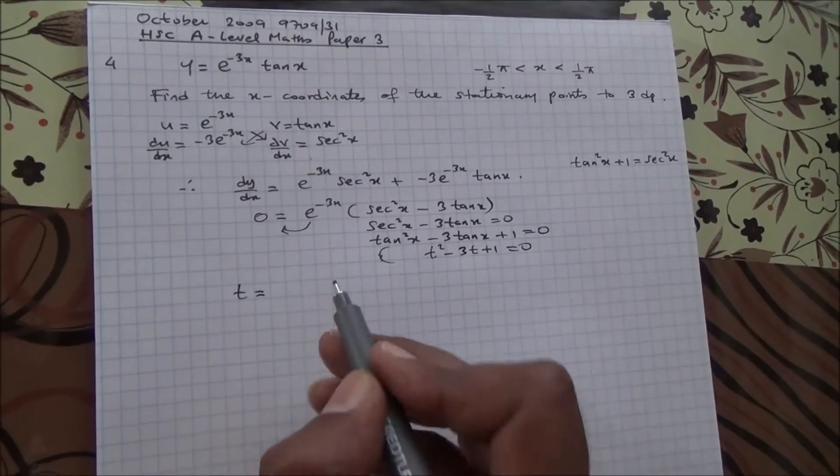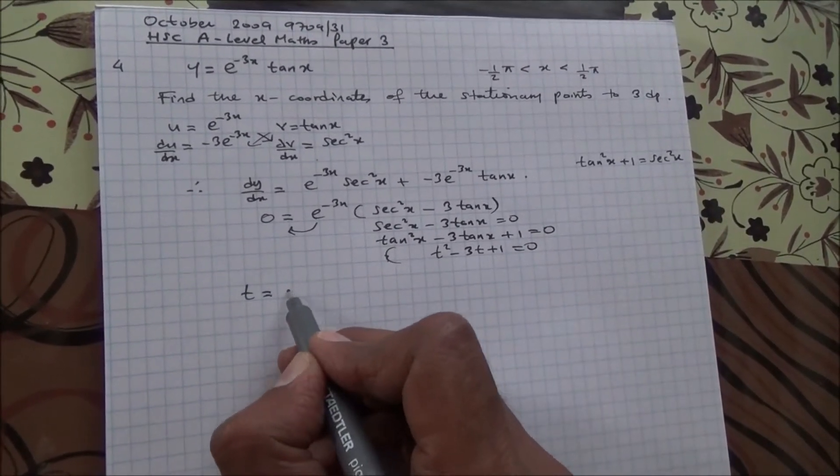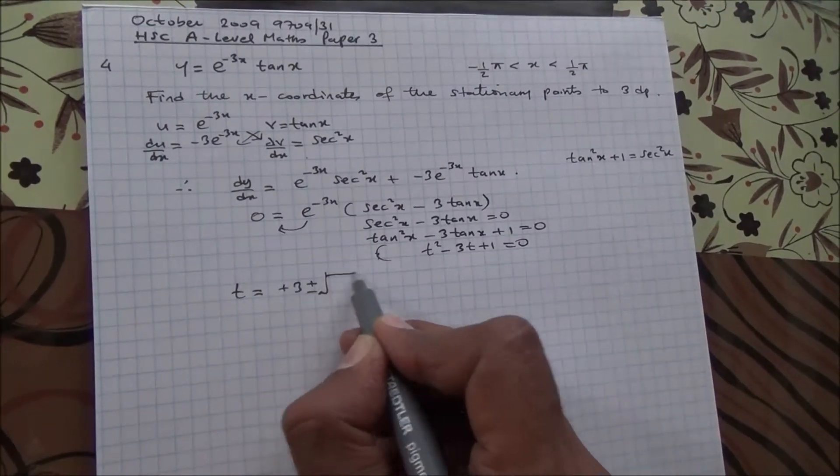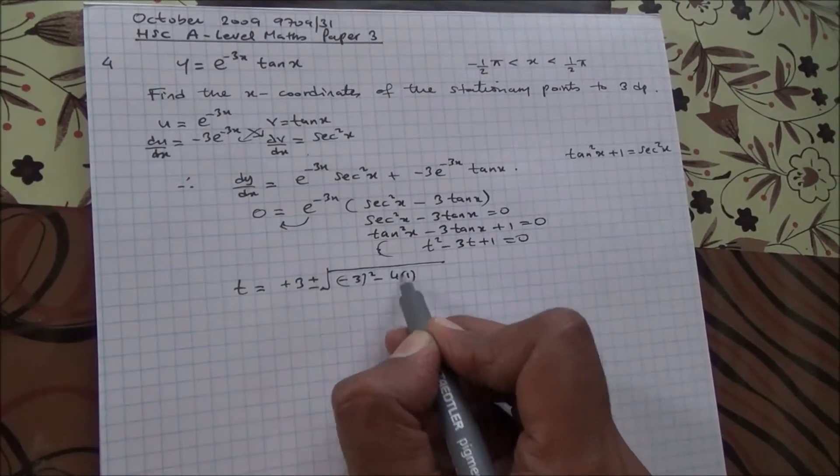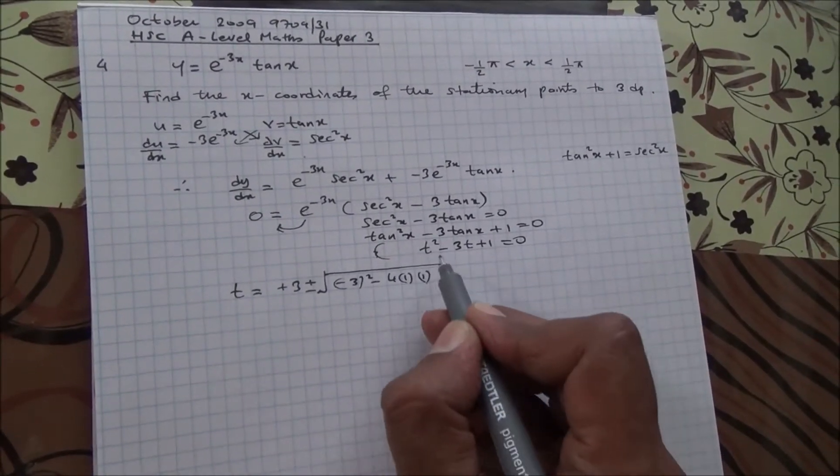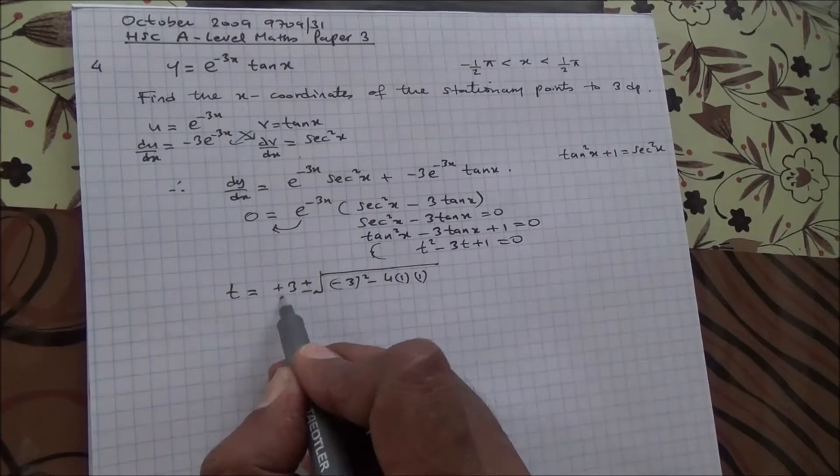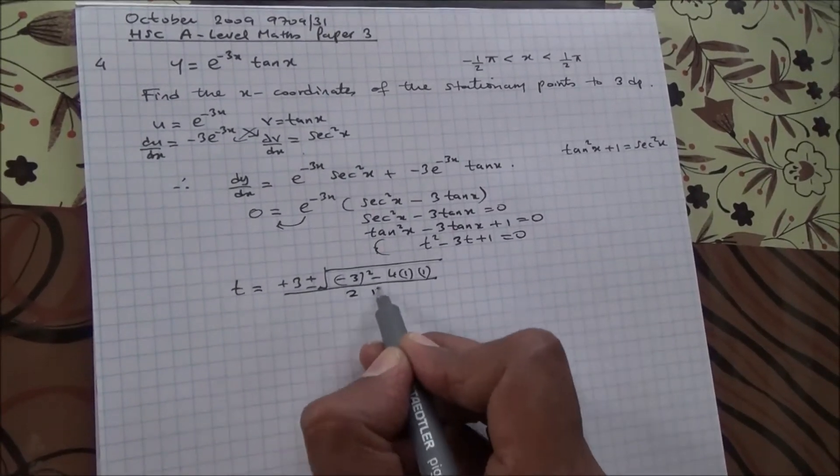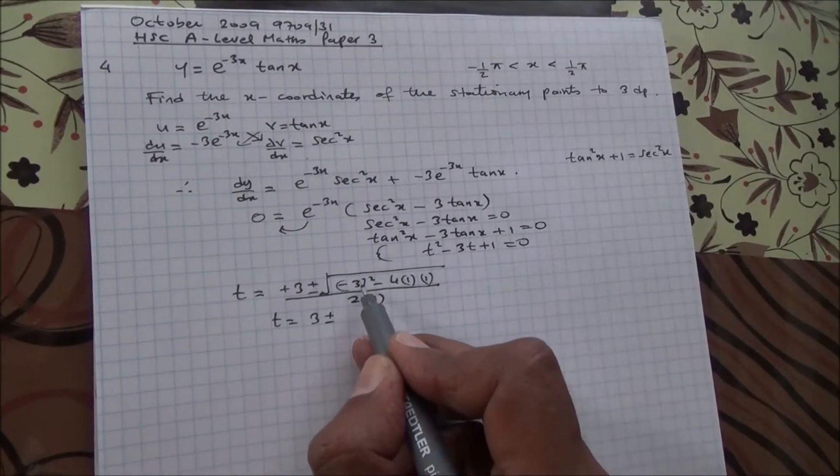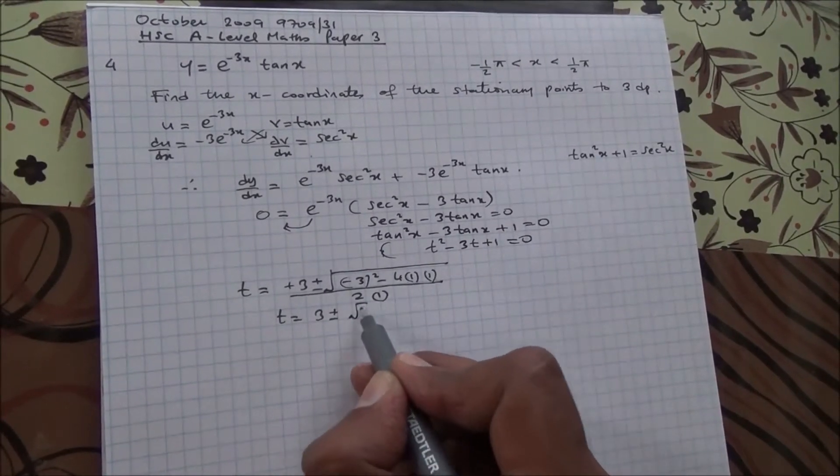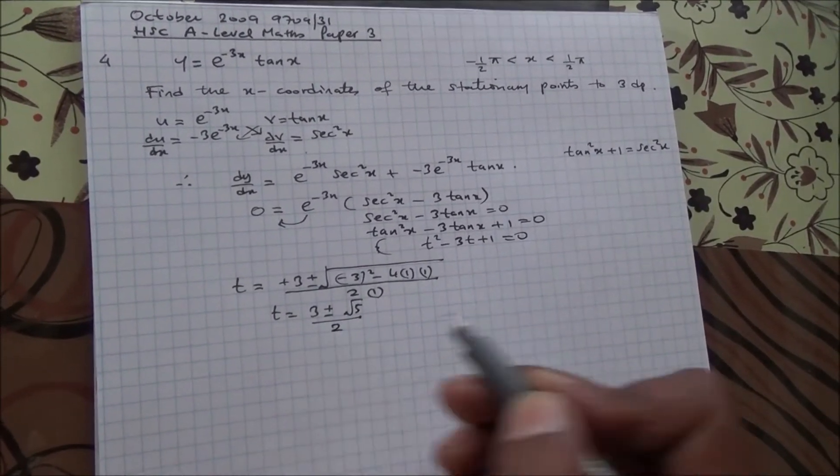So, t is going to be minus 3, minus 3 means plus 3, plus or minus the root of minus 3 to the square minus 4 times a times c. a is 1, c is 1. So, divided by 2a, 2 times 1. t is going to be 3 plus or minus 9 minus 4 is root of 5, all divided by 2.